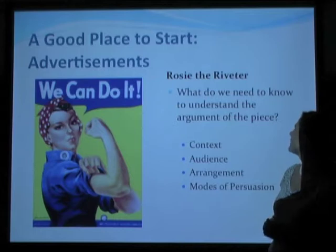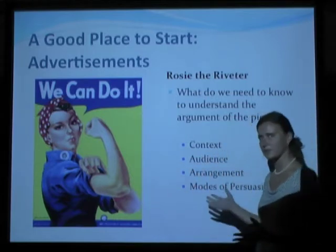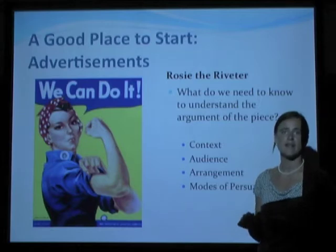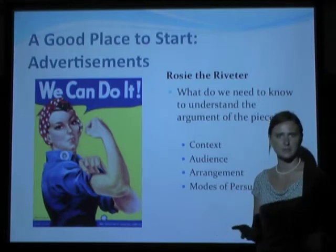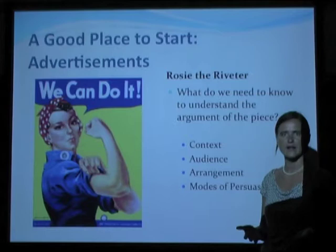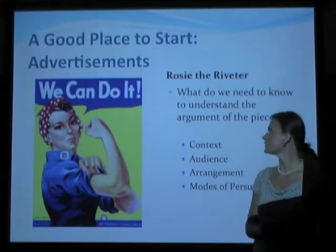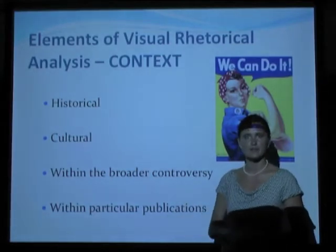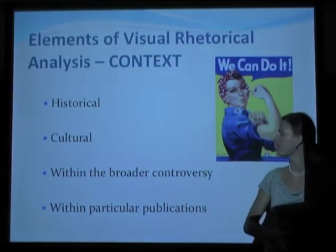I'm going to use this image to introduce the four main parts of visual rhetoric, which are context, audience, arrangement, and then an analysis of the modes of persuasion — ethos, pathos, and logos — in relation to audience. Let's go through this one quickly and then I'll bring in an example of the DREAM Act, since that's your topic for the next few months.